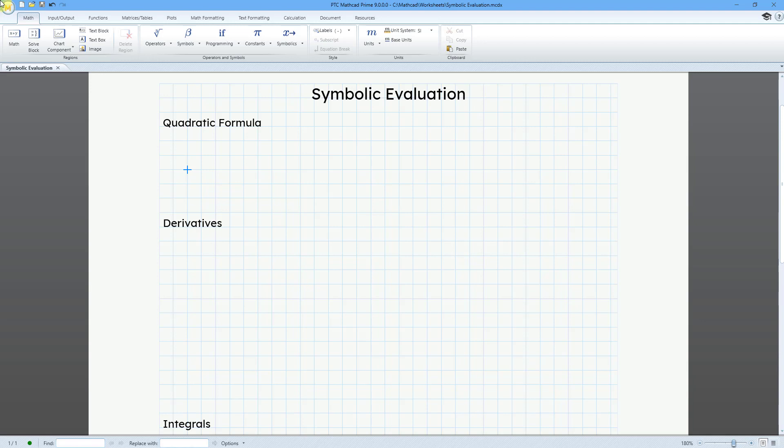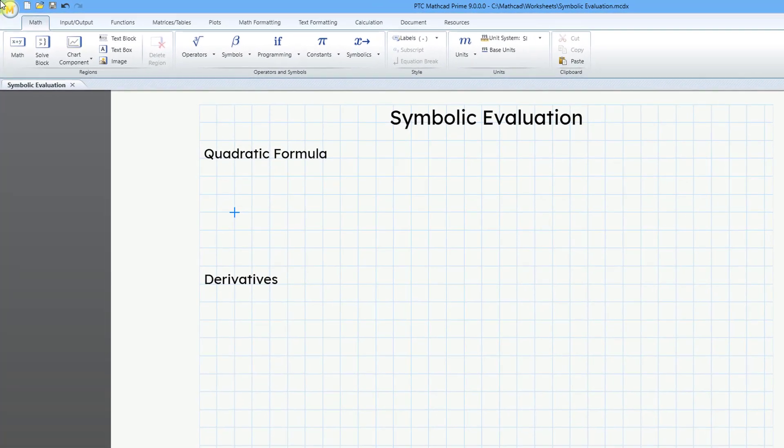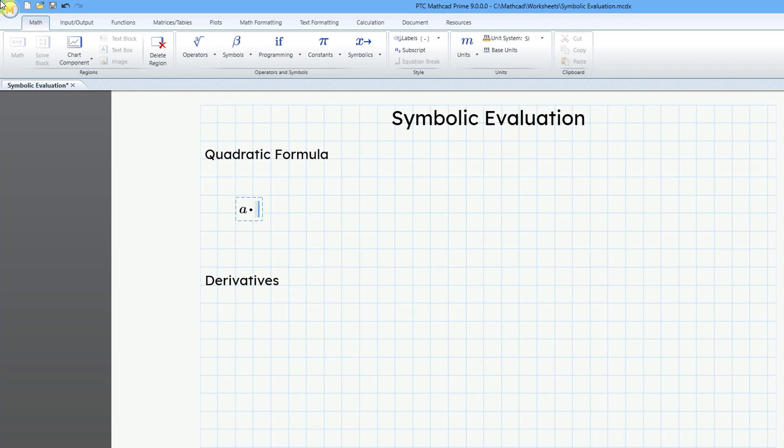We'll start out with the quadratic formula, which you probably learned back in junior high school. We're going to write our formula with coefficients a, b, and c, and a variable x. Let's write a times x, then I'll use shift 6 to get the exponent squared, then I'll use the right arrow to move over, and then plus b times x plus c.